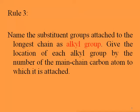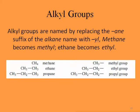Rule number three: name the substituent groups attached to the longest chain as alkyl groups. Give the location of each alkyl group by the number of the main-chain carbon atom to which it is attached. Alkyl groups are named by replacing the -ane suffix of the alkane name with -yl. For example, methane becomes methyl, ethane becomes ethyl, propane becomes propyl, and butane becomes butyl. So methane has CH₄ and the methyl group has CH₃ with a bond. The same applies for ethane/ethyl and propane/propyl.